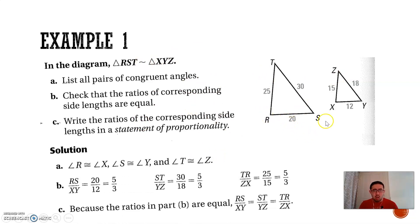What are the corresponding sides? RS and XY, ST and YZ, and TR and ZX. If you look, all of their corresponding ratios are 5 over 3. 20 over 12 simplifies to 5 over 3, 30 over 18 simplifies to 5 over 3, and 25 over 15 simplifies to 5 over 3 as well. Since they're all equal, these must be similar triangles.